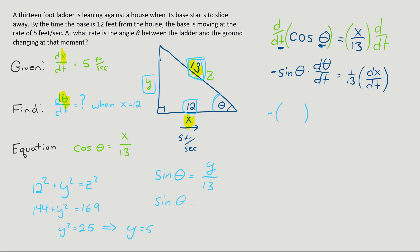So sine theta is equal to 5 over 13, and I can plug that in. So negative 5 over 13 times dθ/dt, which is what we're trying to figure out, equals 1/13 times dx/dt is 5 according to what they told us. I have negative 5/13 times dθ/dt equals 5/13. I'm going to multiply both sides by 13 over negative 5, so that this cancels out on the left side. And then multiply by 13 over negative 5 over here. And we have dθ/dt equals negative 1.